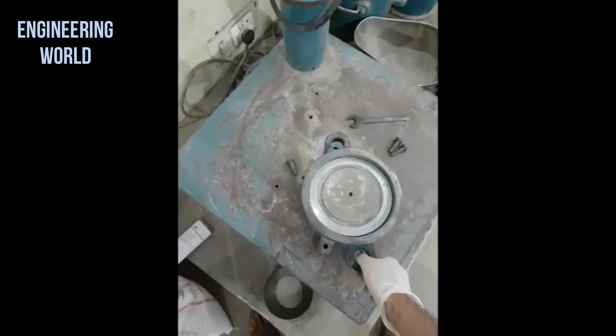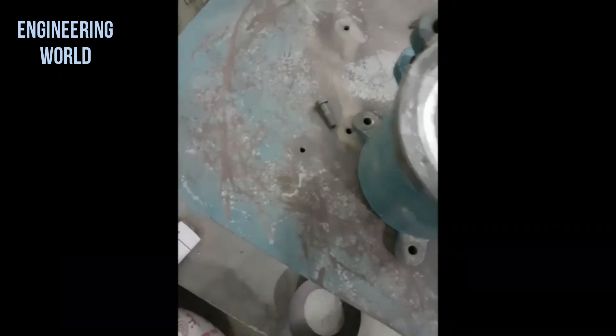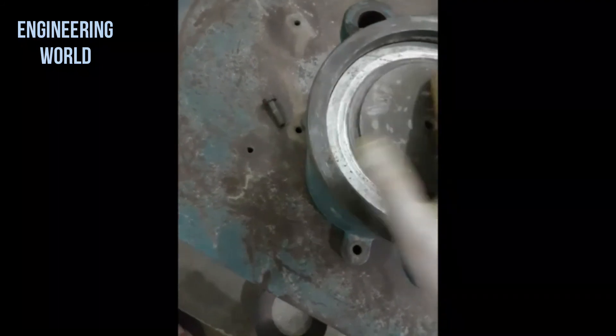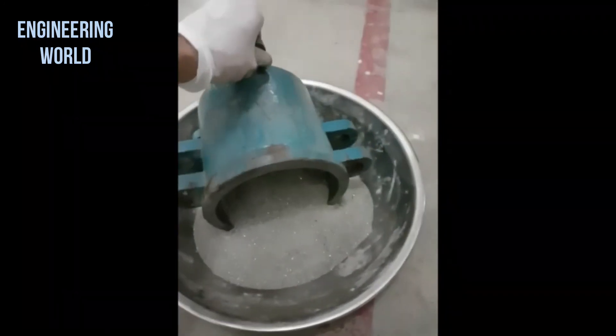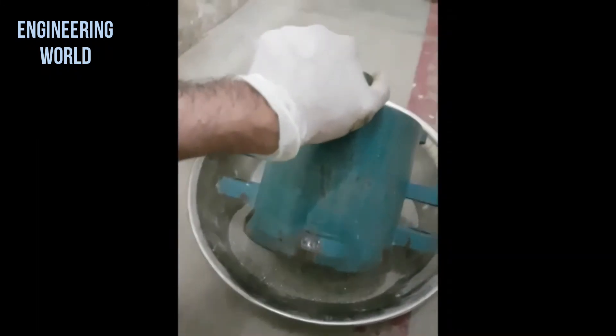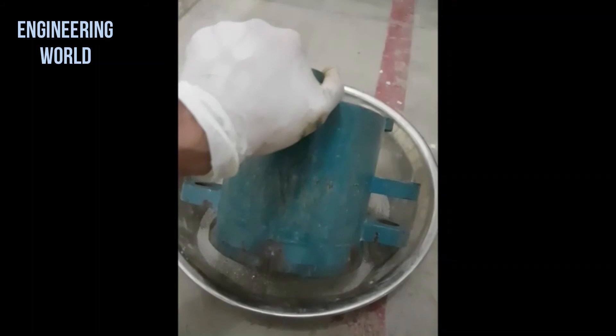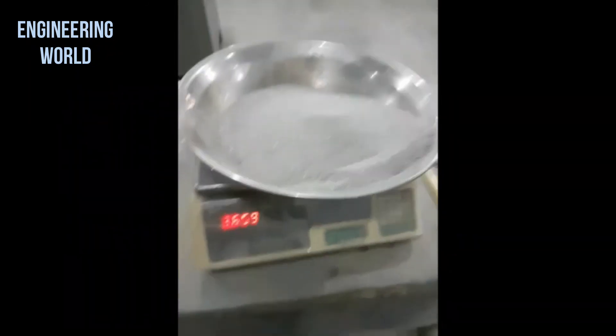The scale currently has the container set at zero weight above it. Then we will determine the weight of the sand that was in the mold. Emptying the contents of the mold we will then weigh the sand. As you can see the weight of the sand is 3.659 kilograms.